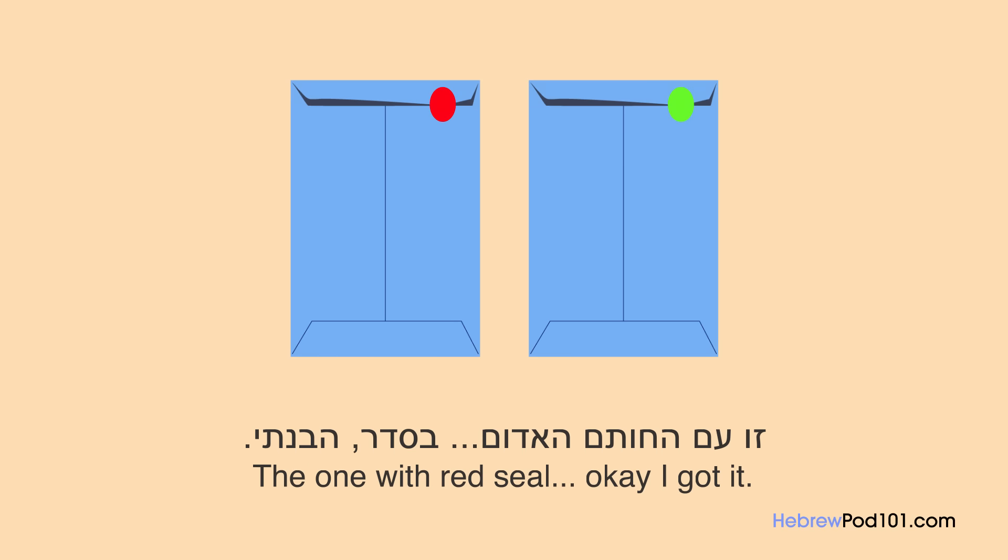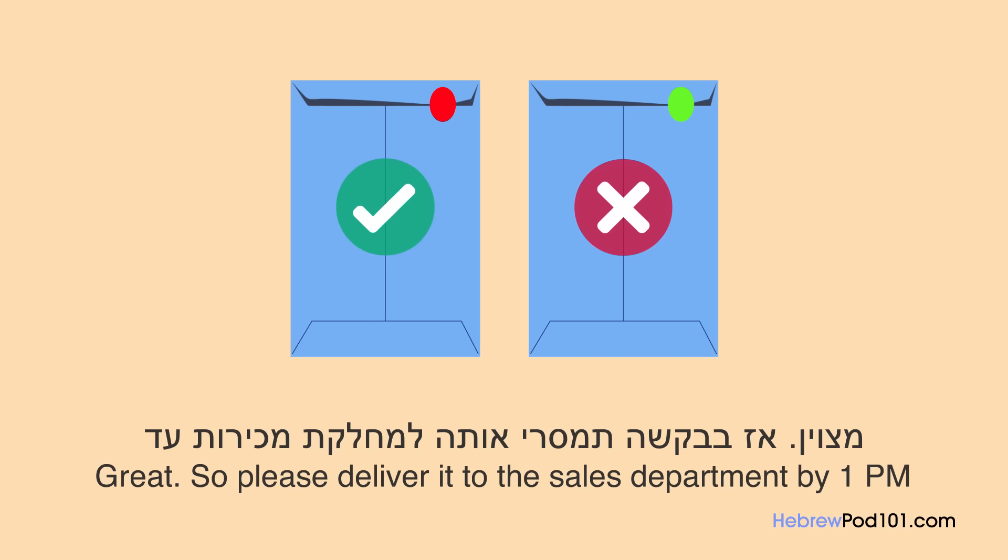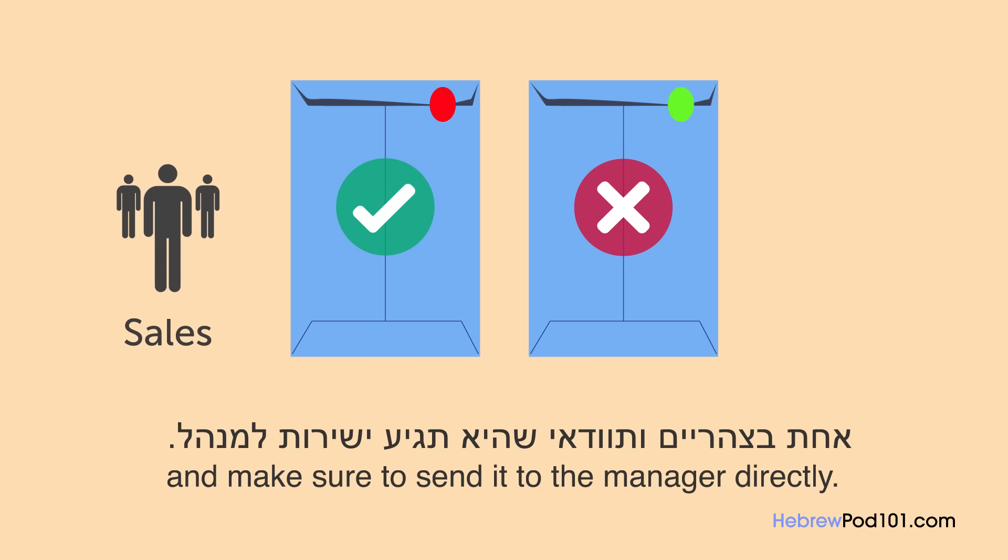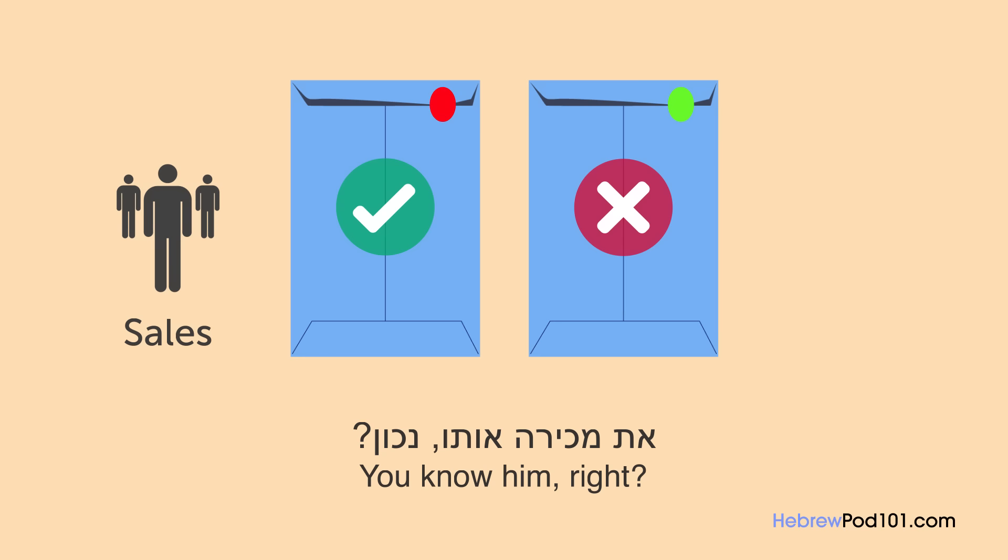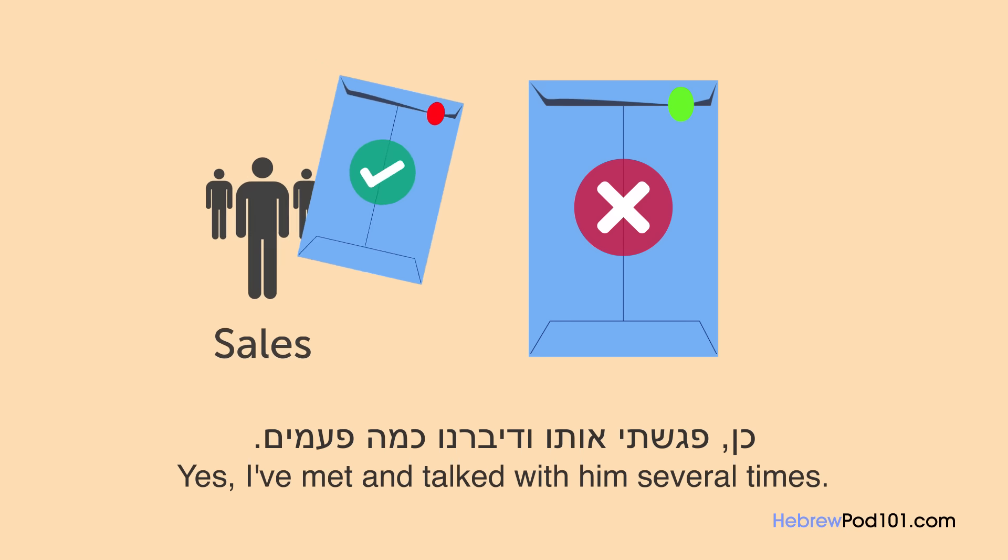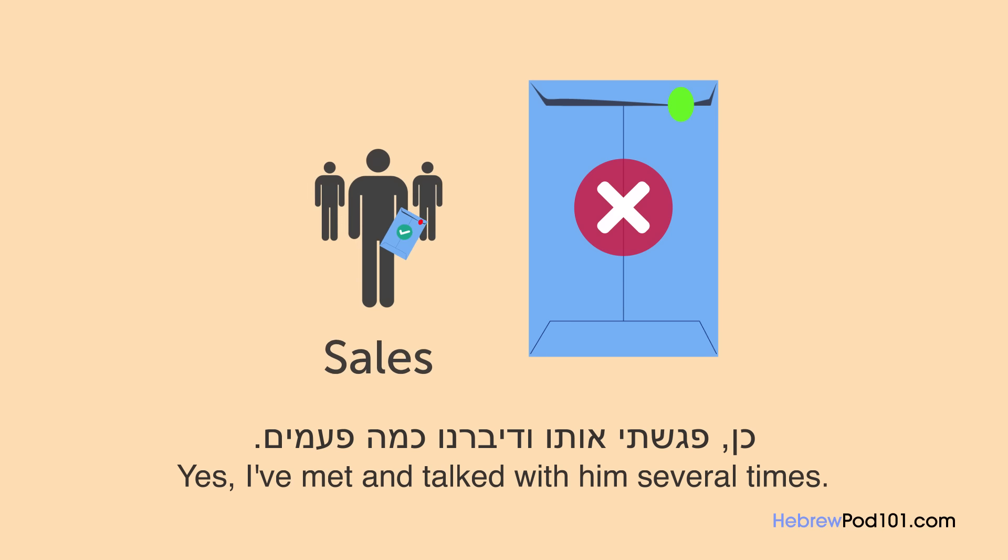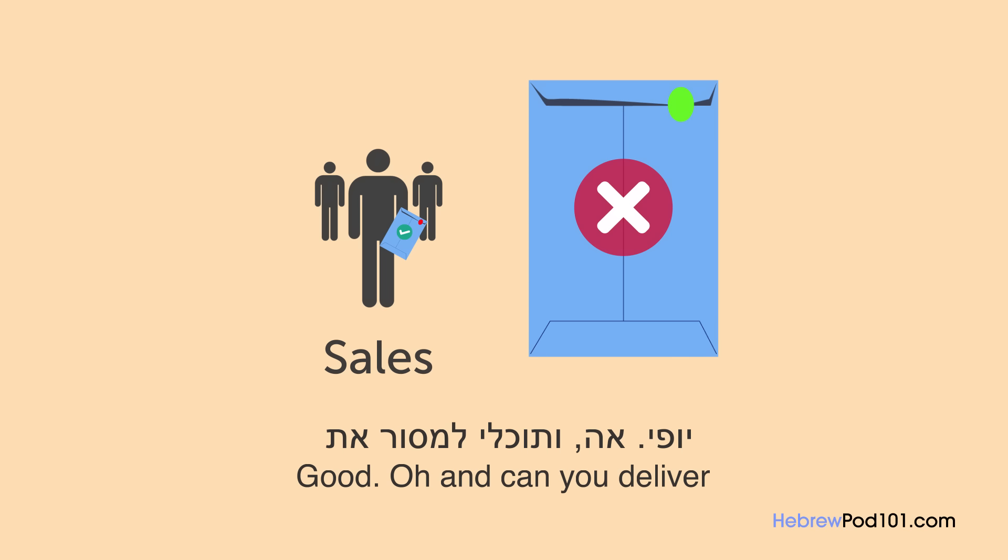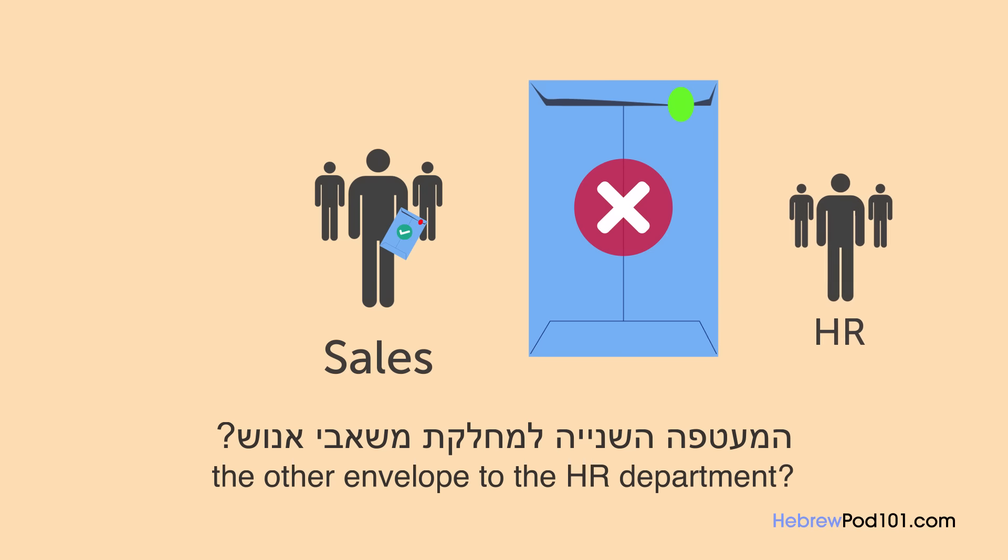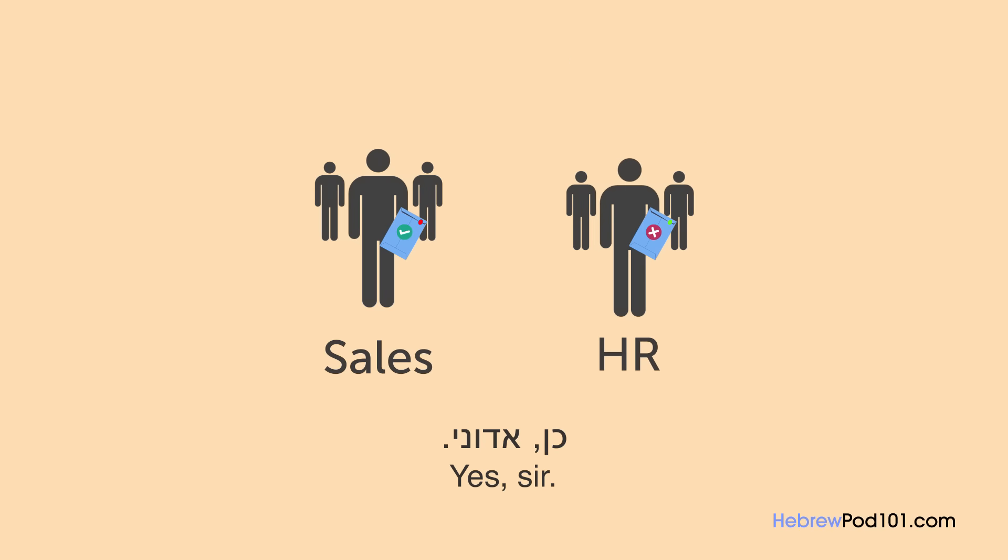זו עם החותם האדום. בסדר, הבנתי. מצוין. אז בבקשה תמסרי אותה למחלקת מחירות עד אחת בצהריים ותבדי שהיא תגיע ישירות למנהל. את מכירה אותו, נכון? כן, פגשתי אותו ודיברנו כמה פעמים. יופי. ותוכלי למסור את המעטפה השנייה למחלקת משאבי אנוש? כן, אדוני.